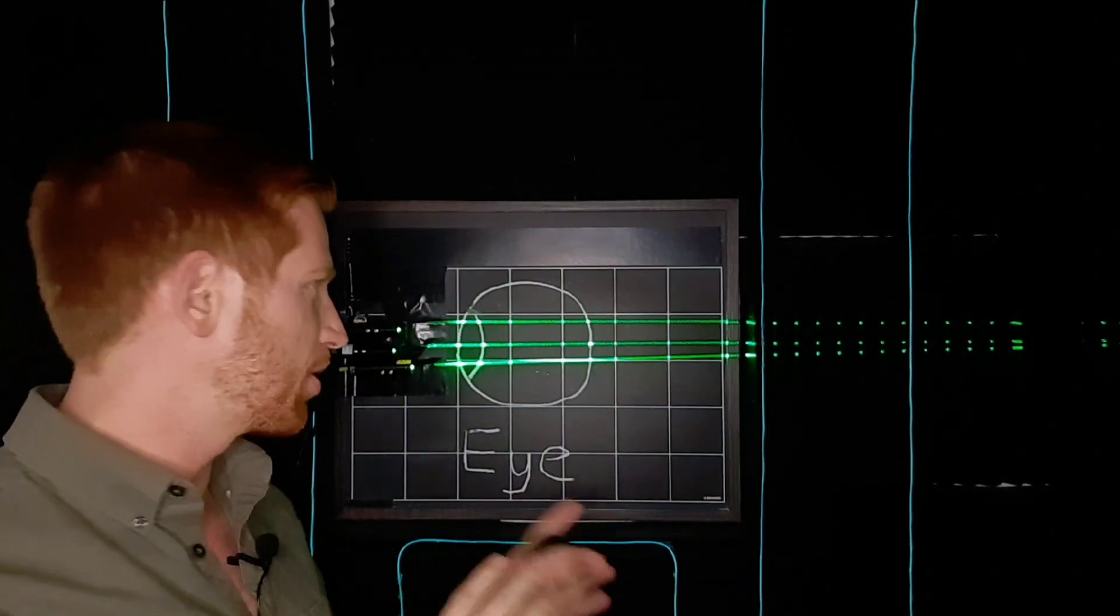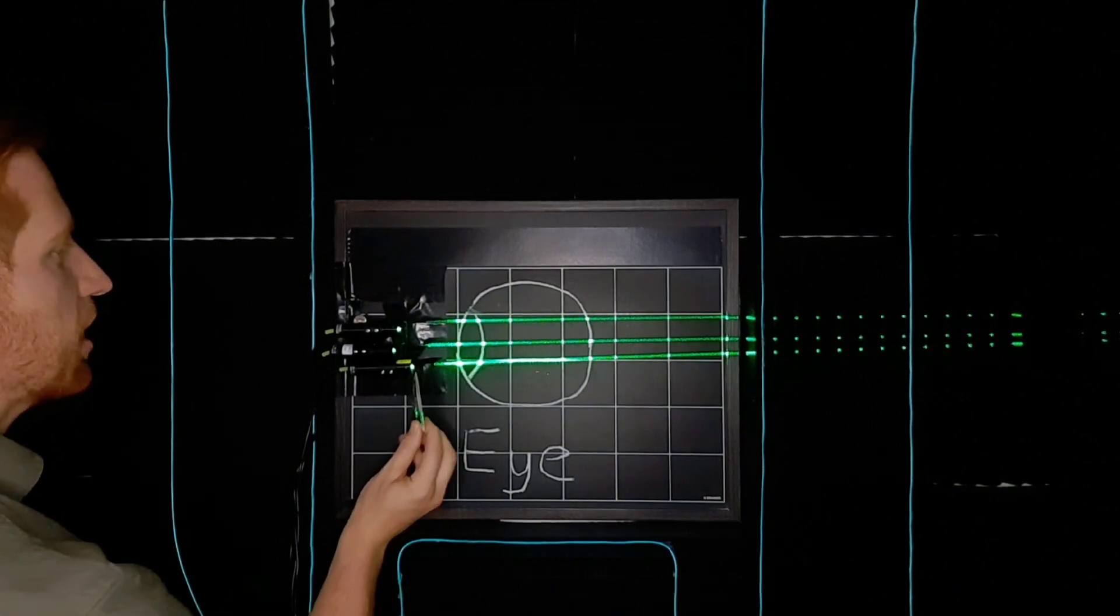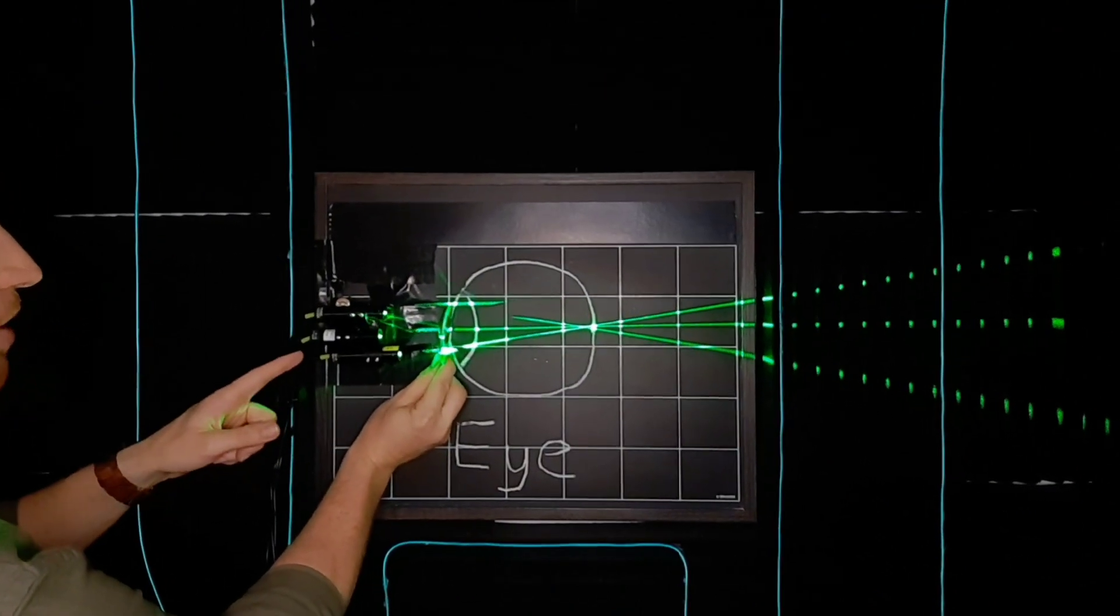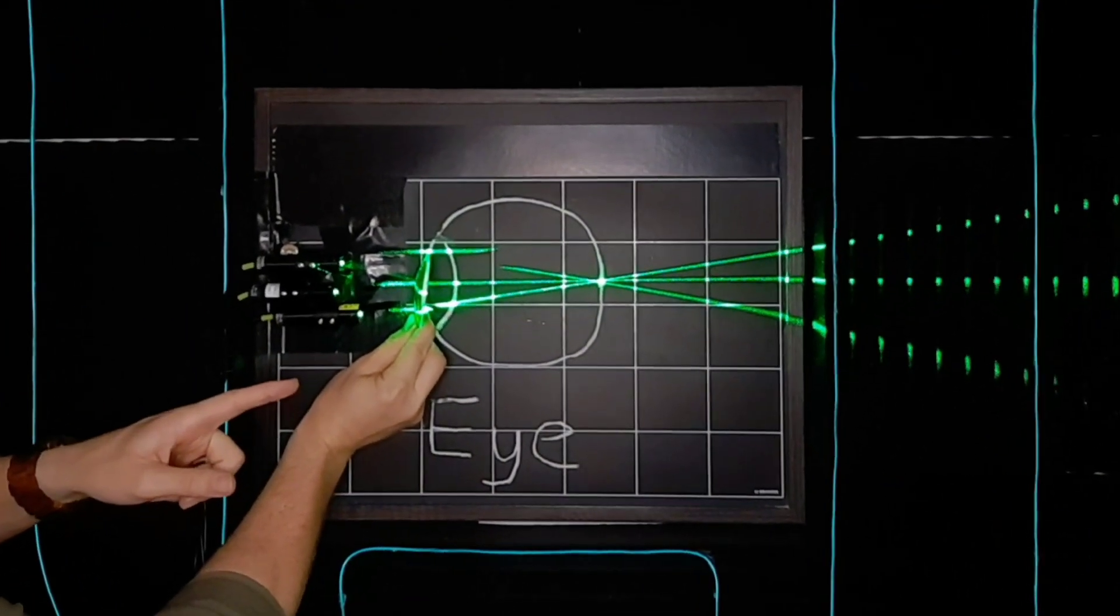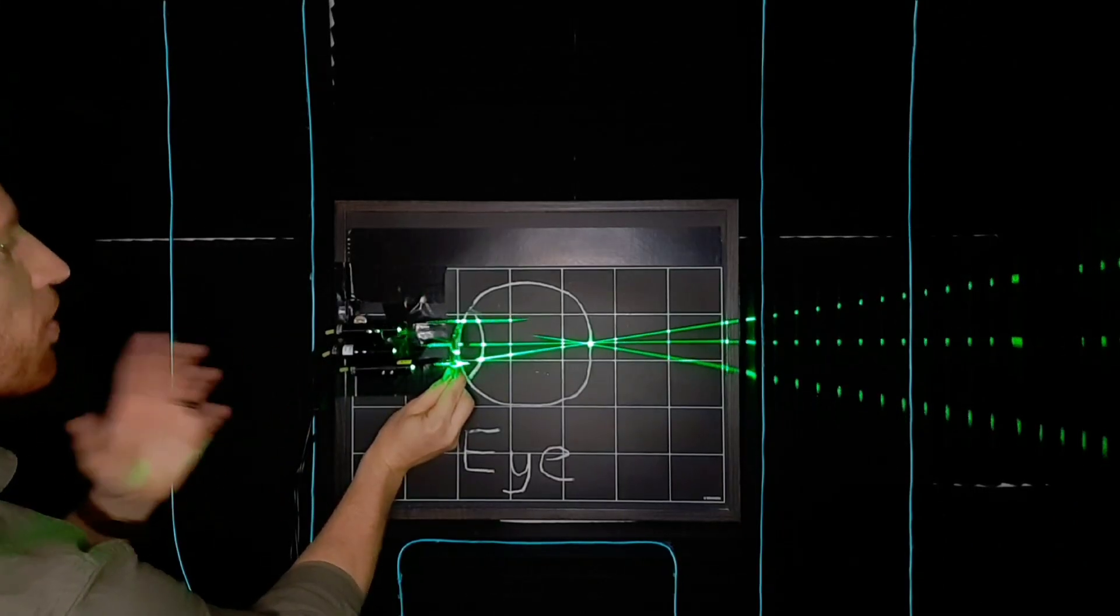I'm going to use this laser demo to illustrate that. So let's say that a perfect eye, focusing light exactly as it should to give you clear vision, would take in light from far away and focus that light down to a single point on your retina. That will give you nice, sharp vision.